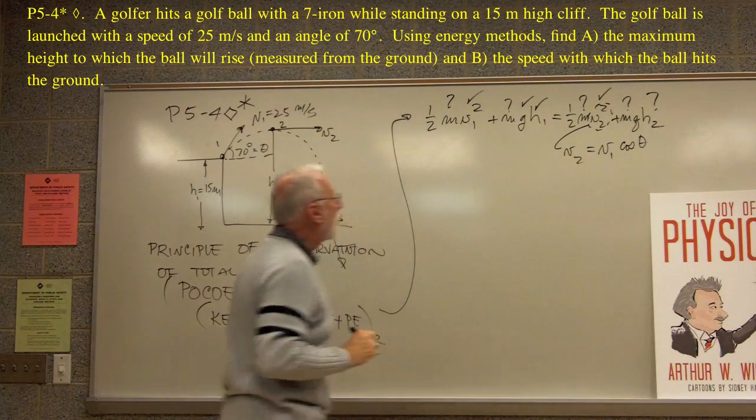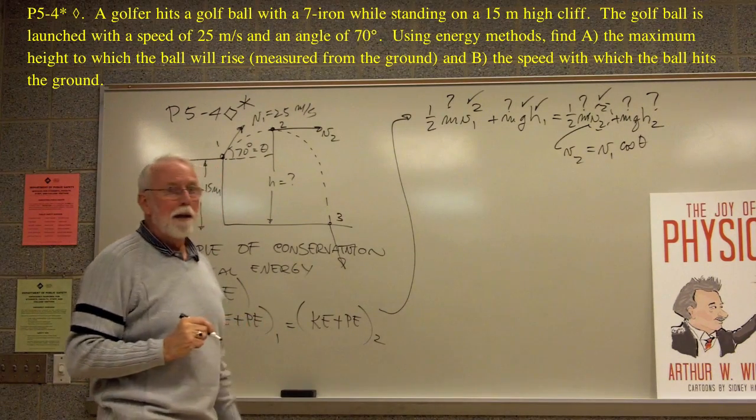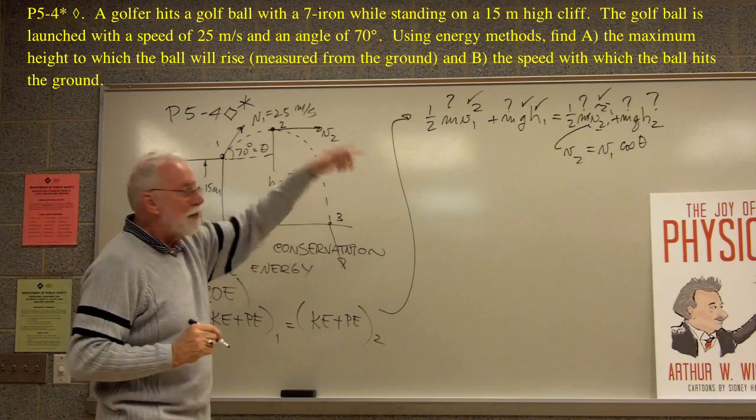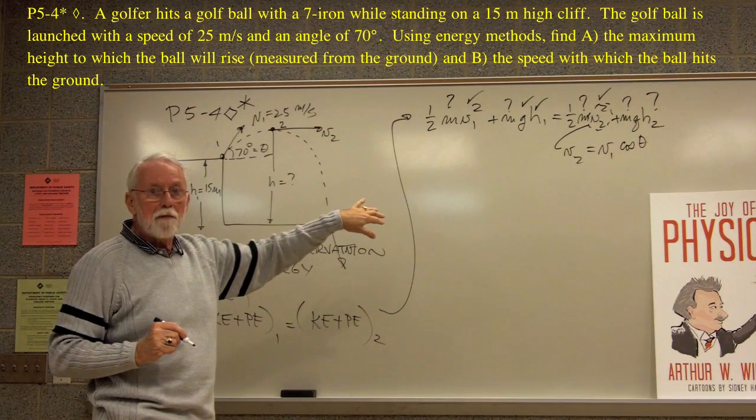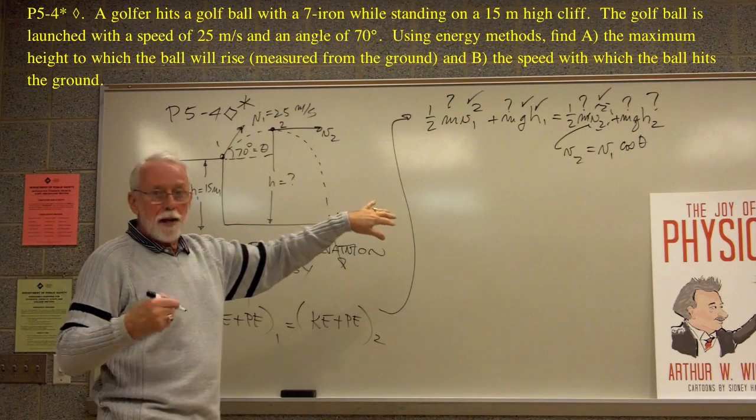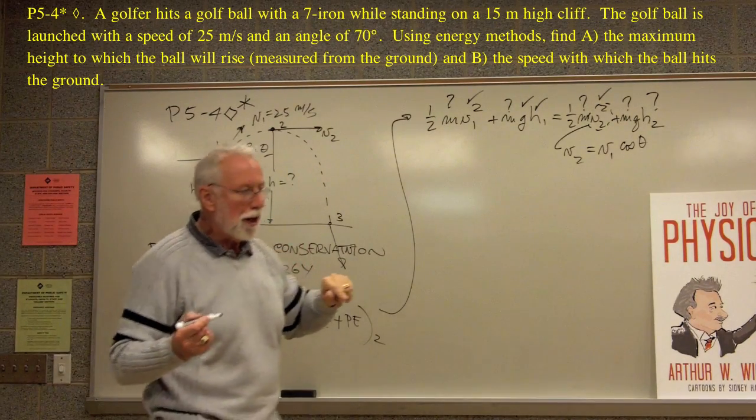So here's our equation. A lot of, oh boy, m is an unknown, but it actually is everywhere in the equation, isn't it? What happens if you factor out an m from the left and an m from the right? And that result is m's cancel. The m's are gone. So the only thing we don't know is h2. We're in good shape.